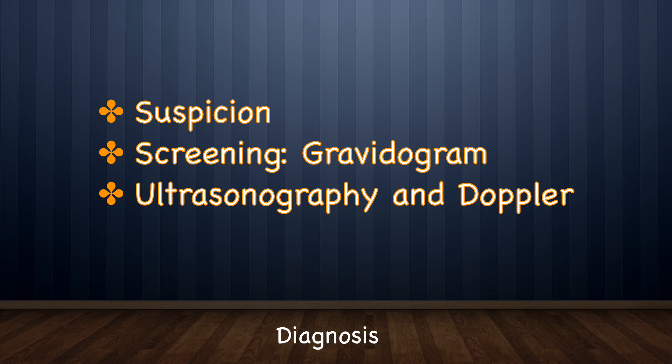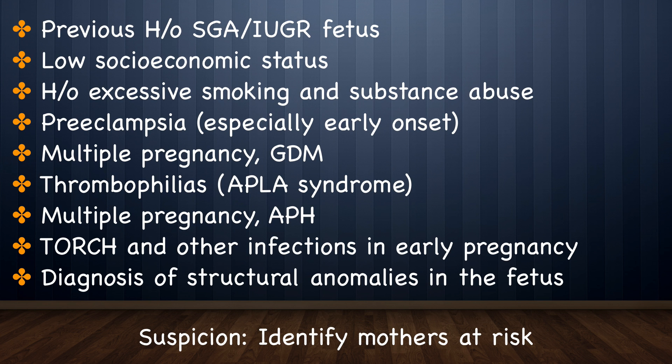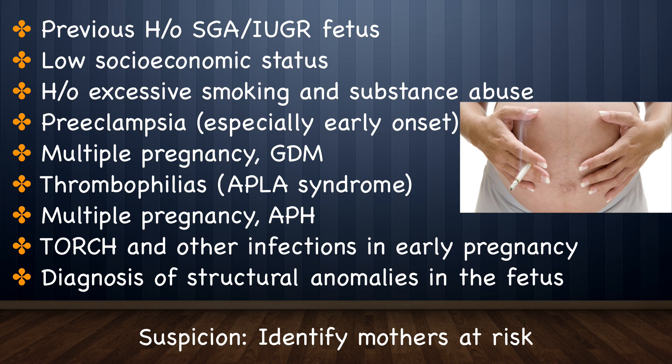I am going to discuss the diagnosis of IUGR under three headings: suspicion, screening, and establishing the diagnosis using ultrasonography and Doppler. Prenatal screening of the general obstetric population based on identifying risk factors for IUGR is important. One should look for IUGR in patients with a history of the conditions listed here. Smoking is an important preventable factor, and a previous history of SGA or IUGR fetus is one of the most important predictive factors for subsequent IUGR.